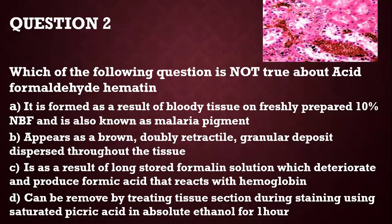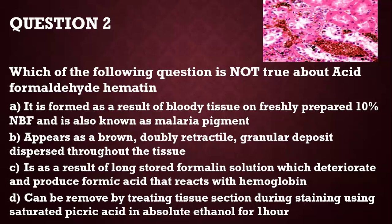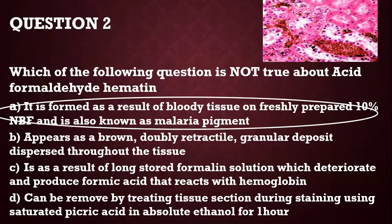Which of the following statements is not true about acid formaldehyde hematine? It is formed as a result of blood tissue or freshly prepared 10% NBF and is also known as malaria pigment. It appears as a brown refractile granular deposit dispersed throughout the tissue. The correct answer is A — it is formed as a result of long-stored formaldehyde solution, which deteriorates and produces formic acid that reacts with hemoglobin. It can be removed by treating tissue sections with saturated picric acid in absolute ethanol for one hour. If you look at the slide, you will notice the brown pigments — those are the acid formaldehyde hematine granules.